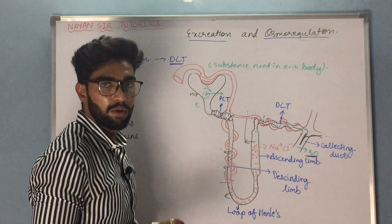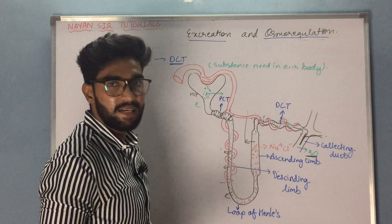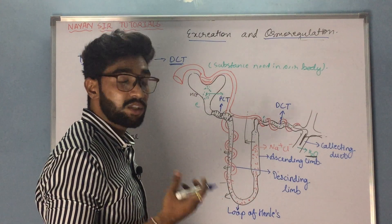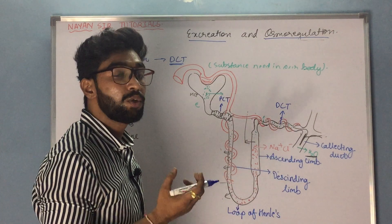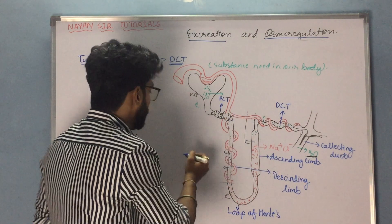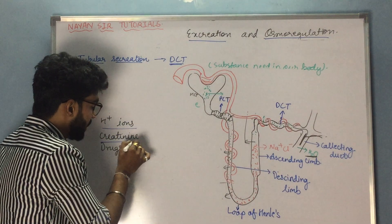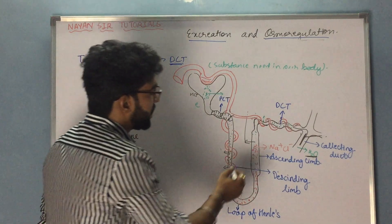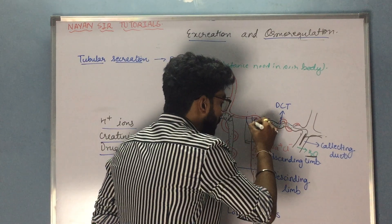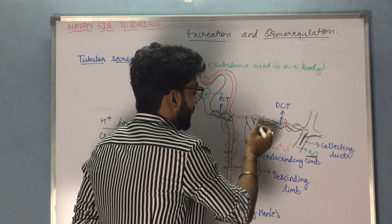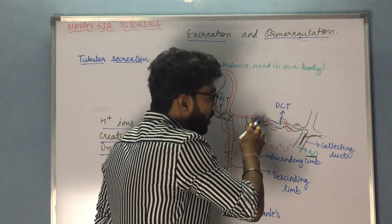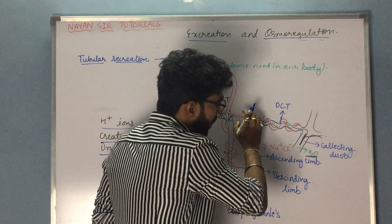These peritubular capillaries consist of substances which our body does not need — those nitrogenous substances — which are then pumped inside the nephron. Those substances are H+ ions, creatinine, and drugs. These H+ ions, creatinine, and drugs are present inside the blood and are pumped from the peritubular capillaries into the nephron.